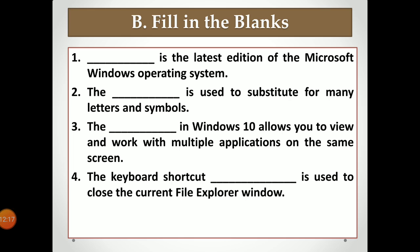Fourth: the keyboard shortcut used to close the current File Explorer window is Ctrl+W. Press Ctrl+W and whatever file or File Explorer is currently open will be closed. If you want to open it again, use Ctrl+E — Ctrl+W closes it and Ctrl+E opens it.